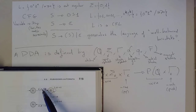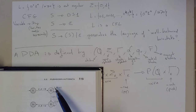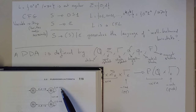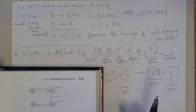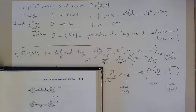The first transition reads epsilon from the input and writes the dollar sign onto the stack — it reads nothing but necessarily pushes dollar. Then there is a loop: it takes zero as input, reads nothing from the stack, but writes zero onto the stack. On the other transition, it reads a one as input, pops a zero from the stack, and pushes nothing. It's important to understand the difference between the input being read and the stack being read.